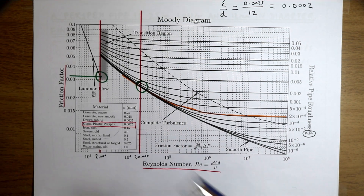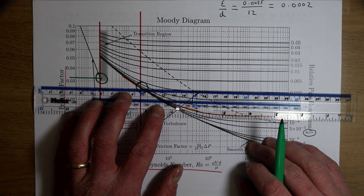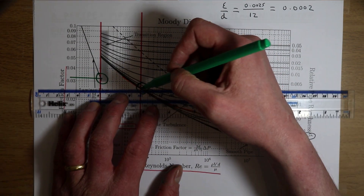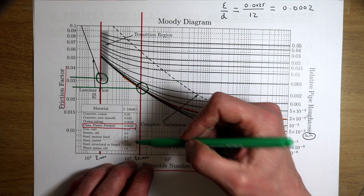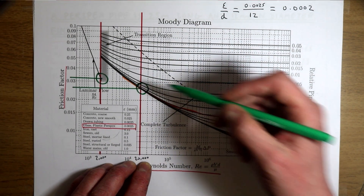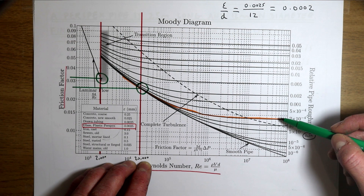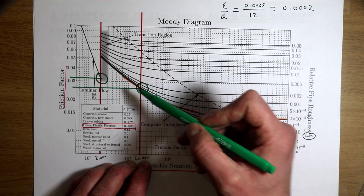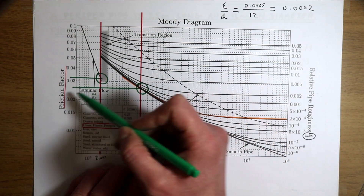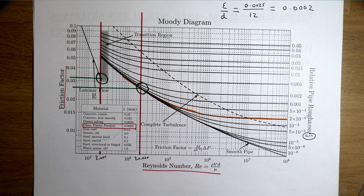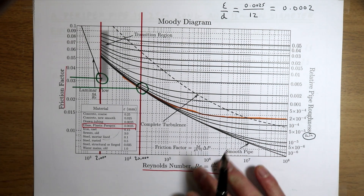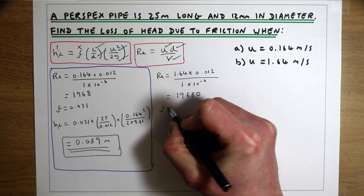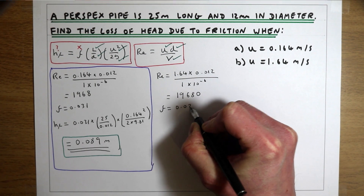Just like the previous example, we draw a horizontal line across from the point where our Reynolds number line crosses the black line for relative roughness 0.0002, and see where it intercepts the y-axis. That gives us a friction factor of approximately 0.0275, so F = 0.0275 for the second part of the example.